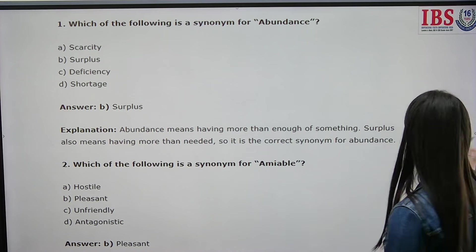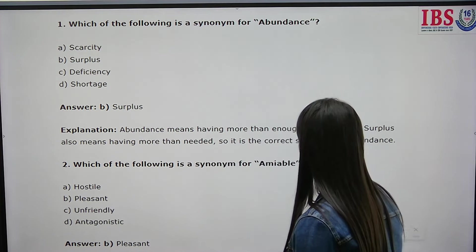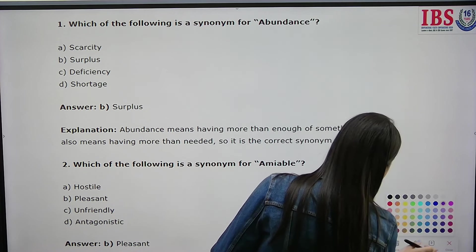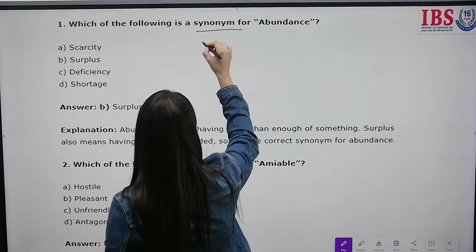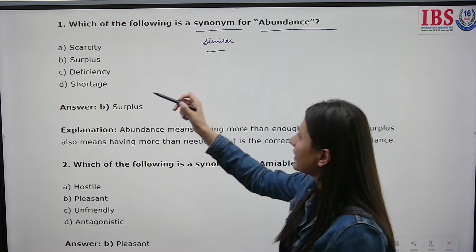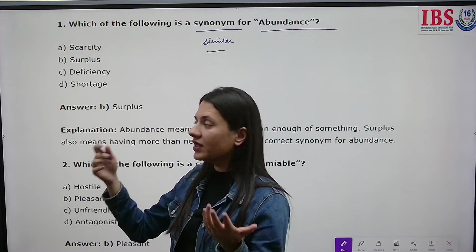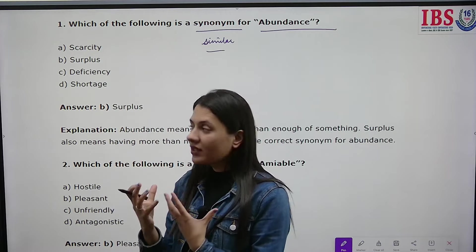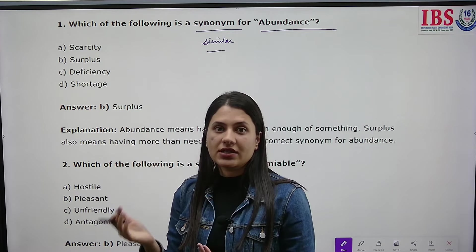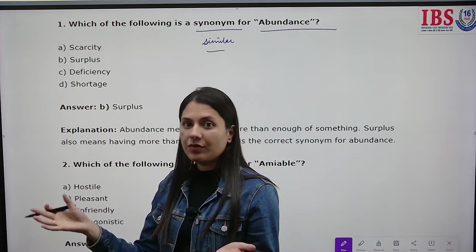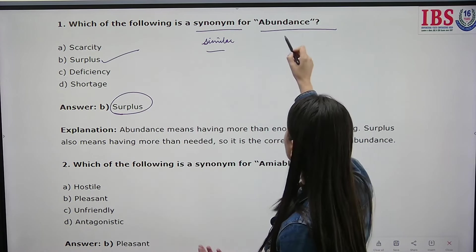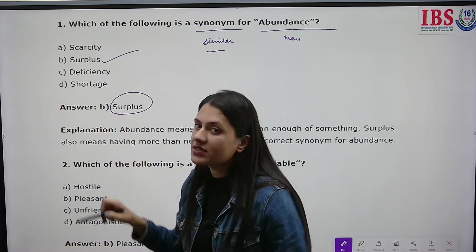Which of the following is a synonym for 'abundance'? Abundance means something that is in full supply. Scarcity means less, surplus means more than needed, deficiency means a lack of something, and shortage also means a lack. Surplus is the answer because abundance means having more than enough, and surplus also means having more than needed. The rest all mean less.